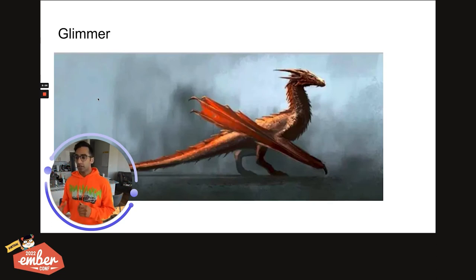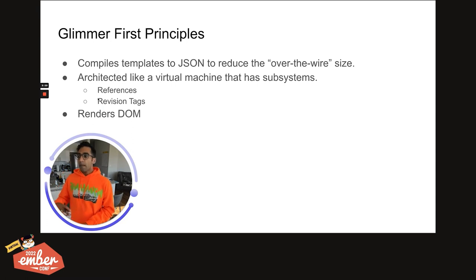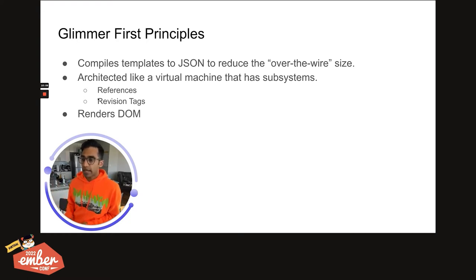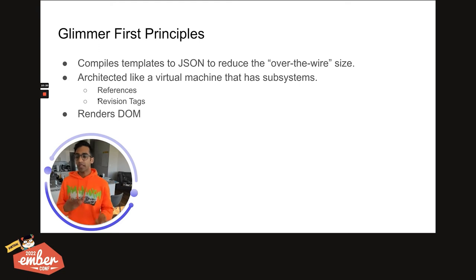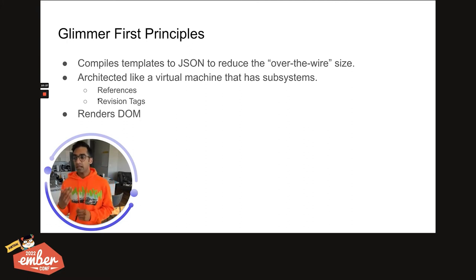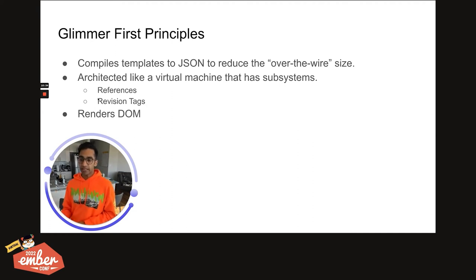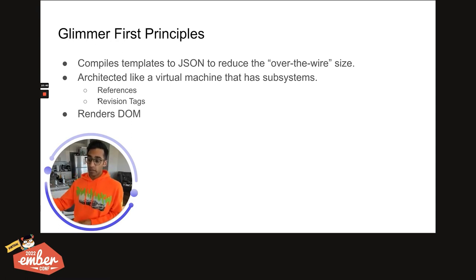So let's get into it. We have our first dragon here, and our first dragon is Glimmer. One of my biggest pet peeves when I was first learning Ember was that I kept seeing Glimmer, and when I asked about what Glimmer was, people said don't worry about it, it's just magic. That didn't help me at all, because then I was stuck wondering whether my bug was related to Glimmer or not. So understanding Glimmer with first principles is important.